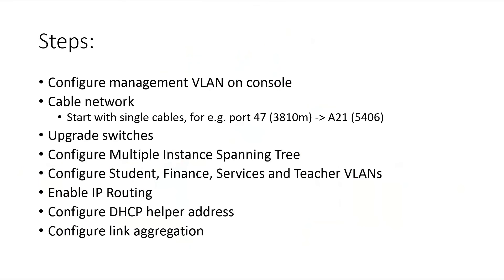Here are the steps we'll take. First, configure the management VLAN via console to get switching connectivity going. Then cable the network starting with single cables. Next, upgrade the switches to the latest supported firmware. We'll configure Multiple Instance Spanning Tree for layer 2 loop protection, then configure the student, services, and teacher VLANs. After that we'll enable IP routing on the core switch and configure DHCP helper addresses.